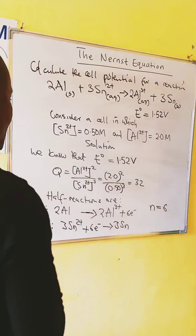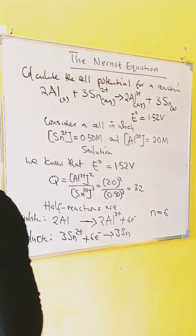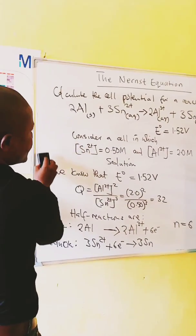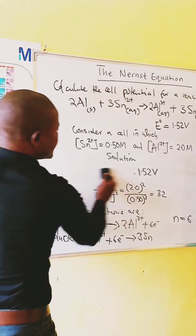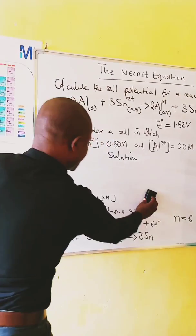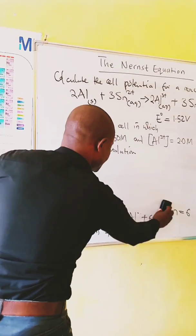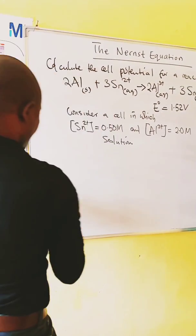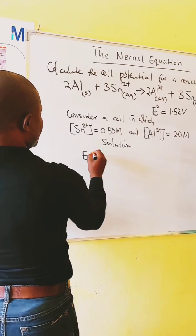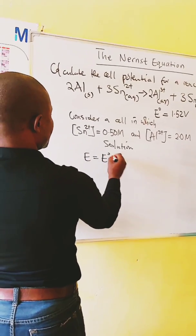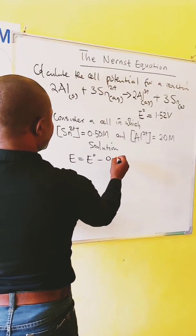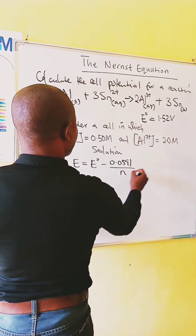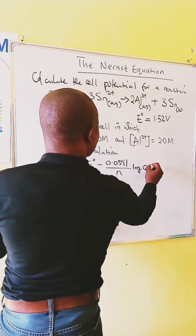We now use the equation, the Nernst equation, to calculate the cell potential. We know that E is equal to E0 minus 0.0591 over n log Q.